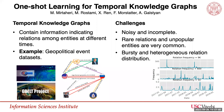Temporal knowledge graphs contain information indicating relations among entities at different times. For example, geopolitical knowledge graphs include coded interactions between socio-political actors. The left figure shows an example of a geopolitical knowledge graph.